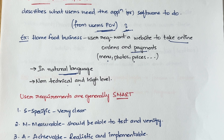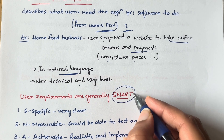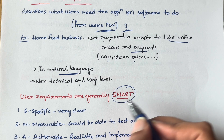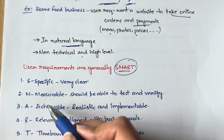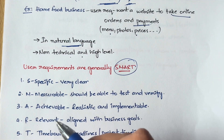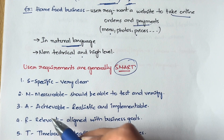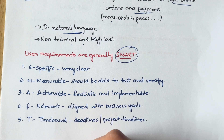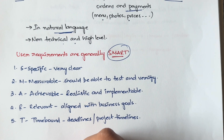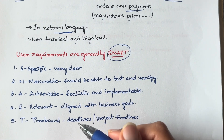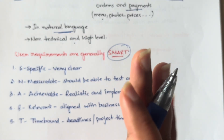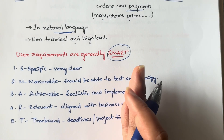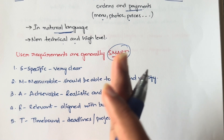The main thing to remember is that user requirements are generally SMART. SMART stands for Specific, Measurable, Achievable, Relevant, and Time-bound. Let's go through each of them one by one with an example so they are easy to remember.